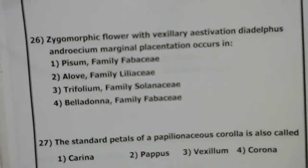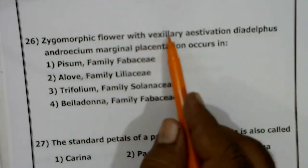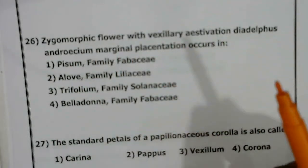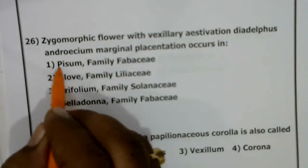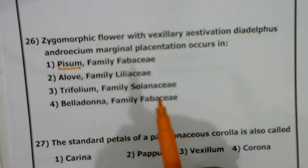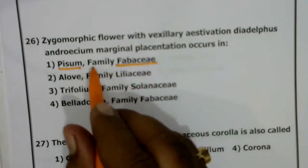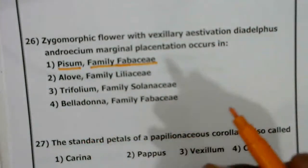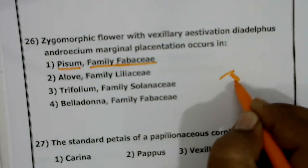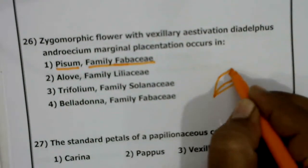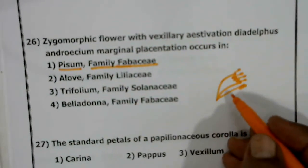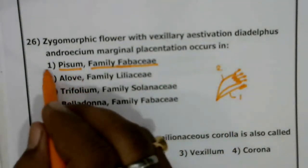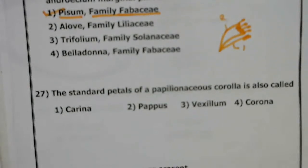Zygomorphic flowers with vexillary aestivation, diadelphous androecium, and marginal placentation occur in Fabaceae. Vexillary aestivation refers to Pisum. Marginal placentation is a feature of Fabaceae. Diadelphous condition means the anthers are arranged in two bundles — that is the diadelphous condition in Fabaceae, with marginal placentation seen in Pisum sativum.